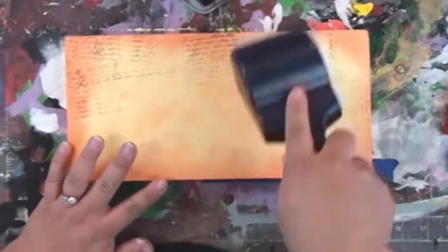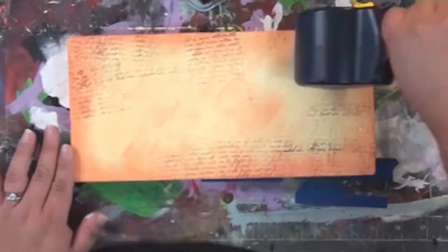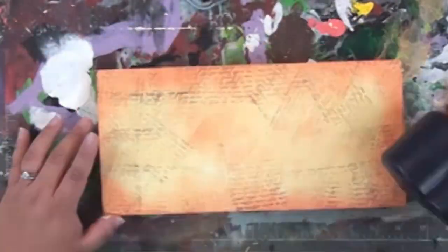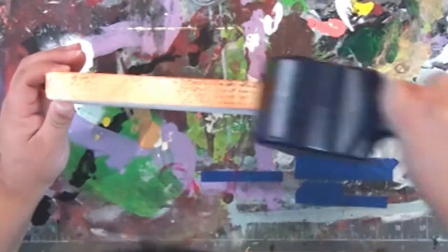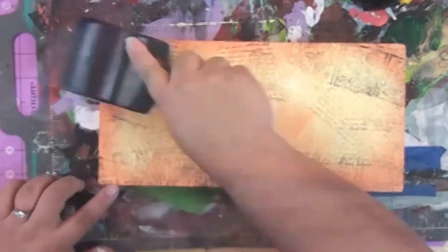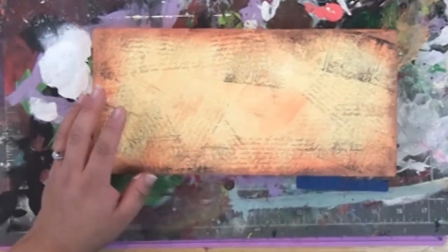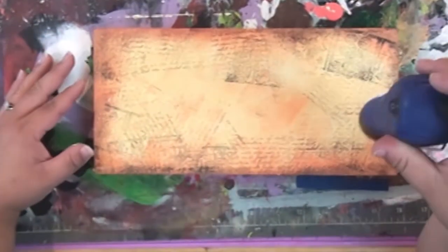After I did the inking, I'm using a Rolograph stamp wheel and some Colorbox Crafters ink with this script wheel to add some texture. Then I'm going to go back in with a postage stamp—it's a faux postage stamp Rolograph wheel—and some Donna Salazar mixed media inks to add a little bit more texture.